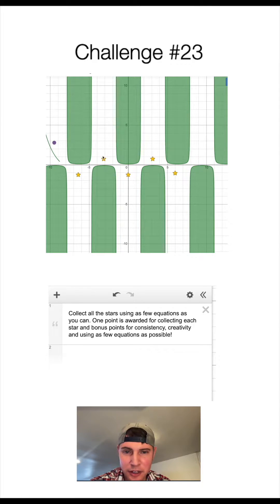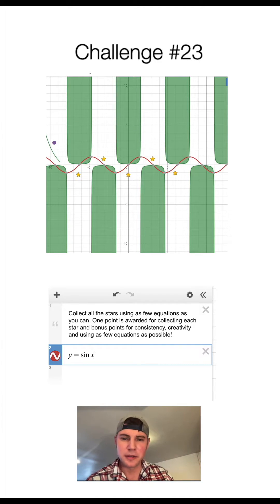This marble will go down, up, down, up, down. So I think the smartest thought here is to use a sine function. It goes up, down, up, down, up, down. Now we need to make some transformations to the sine function so that we can hit all the stars.